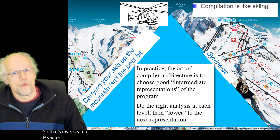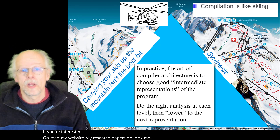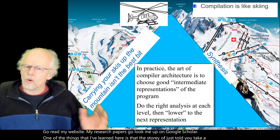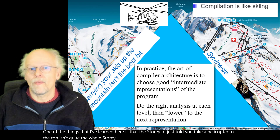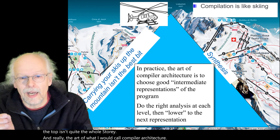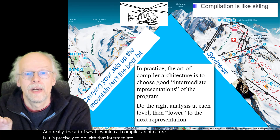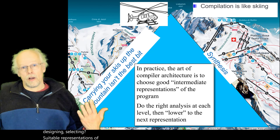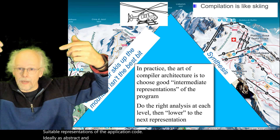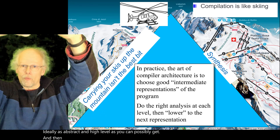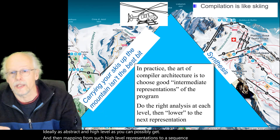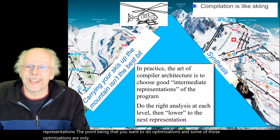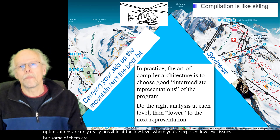If you're interested, go read my website, my research papers, go look me up on Google Scholar. One of the things that I've learned is that the story I've just told you — take a helicopter to the top — isn't quite the whole story. Really the art of what I would call compiler architecture is precisely to do with that intermediate representation concept: choosing, designing, and selecting suitable representations of the application code, ideally as abstract and high level as you can possibly get, and then mapping from such high level representations to a sequence of lower level representations. The point is that you want to do optimizations, and some of those optimizations are only really possible at the low level where you've exposed low level issues, but some of them are enormously easier if you do them at the high level.